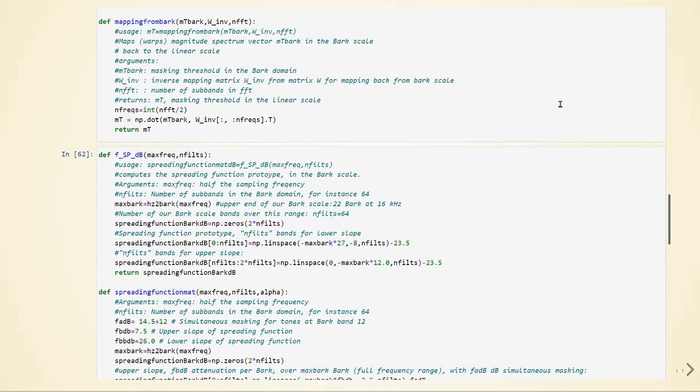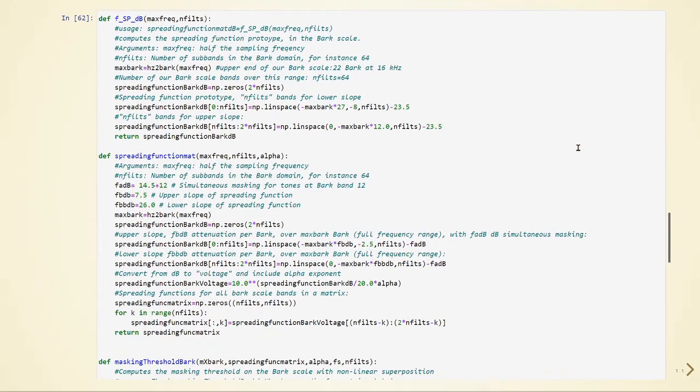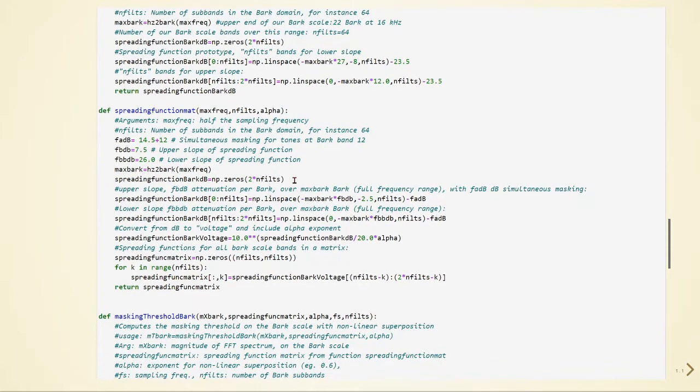We'll go through these functions later. We will not use them all at once, but I'm just going through here. First we use this spreading function math that takes as arguments half of the sampling frequency, so the Nyquist frequency, the number of subbands in the Bark domain, and also the coefficient alpha. Here we have some values, for example for the simultaneous masking for tones at the Bark band 12. We have the upper slope of the spreading function and the lower slope of the spreading function.